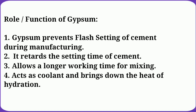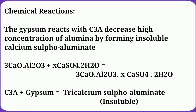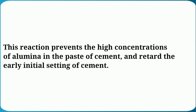This is an important topic in the cement manufacturing process. After initial setting, the cement paste becomes tough. The addition of gypsum retards the dissolution of tricalcium aluminate by forming calcium sulfo aluminate in solution. The chemical reaction: 3CaO·Al₂O₃ reacts with gypsum to form tricalcium sulfo aluminate (3CaO·Al₂O₃·CaSO₄·2H₂O). This reaction prevents high concentrations of aluminate in the cement paste and retards the early initial setting of cement.